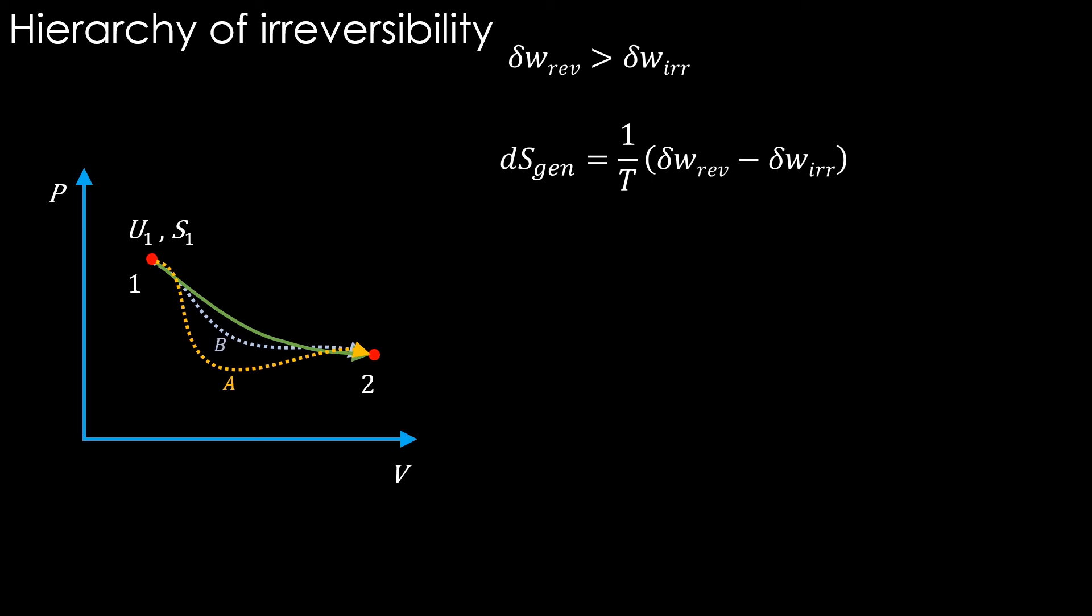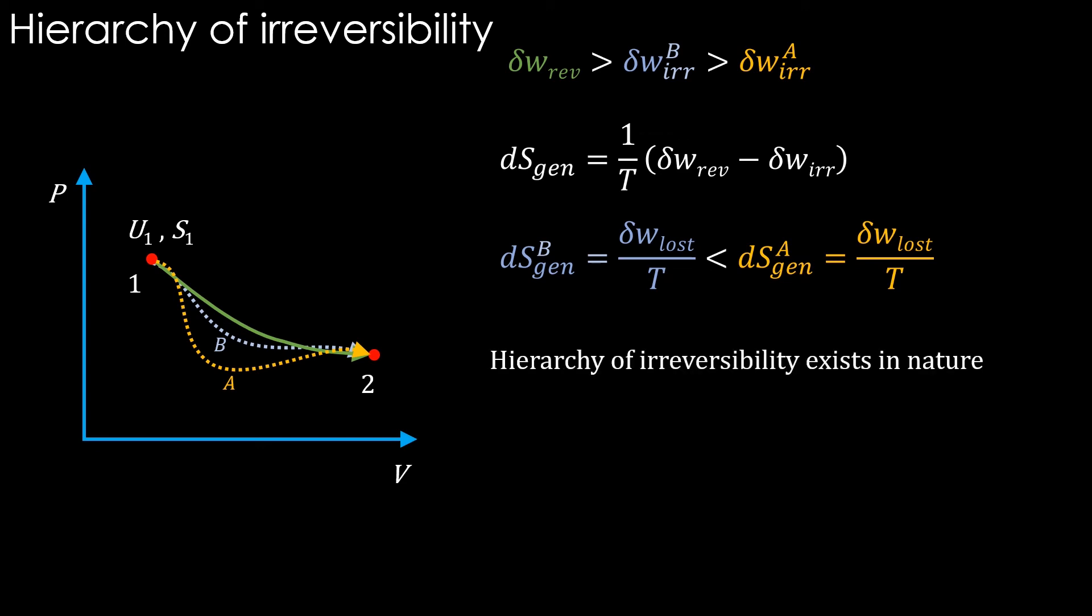When we consider the work done, it is higher in path B than A. Therefore, the entropy production is lesser in path B than A. Thus a hierarchy of irreversibility exists in nature.